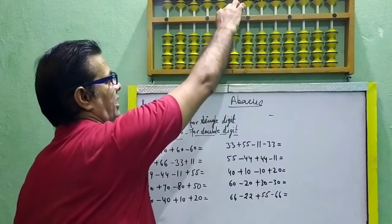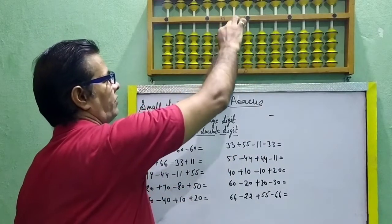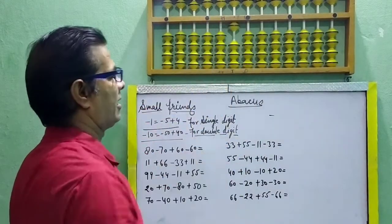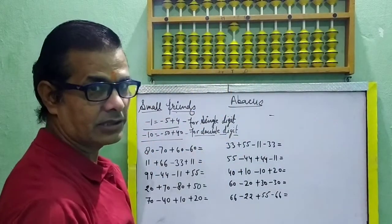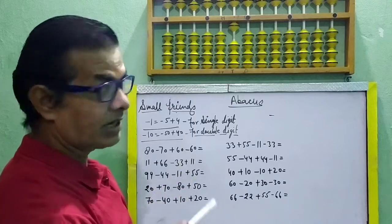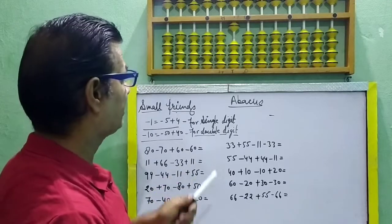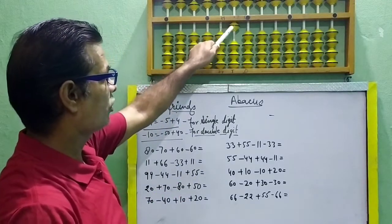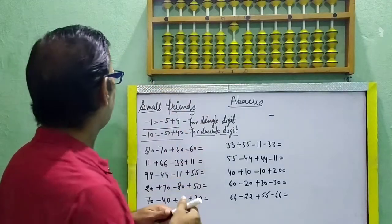Minus 50, or minus 10. Minus 50 and minus 10 — it means 60. So your answer is 10.